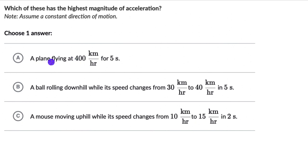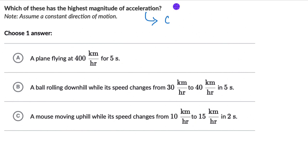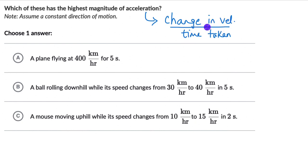Why don't you pause the video, read the options, and try this one on your own. Hopefully you've given this a shot. So acceleration is the rate of change of velocity — how quickly or slowly the velocity is changing. We can write it as: acceleration = change in velocity divided by time taken.